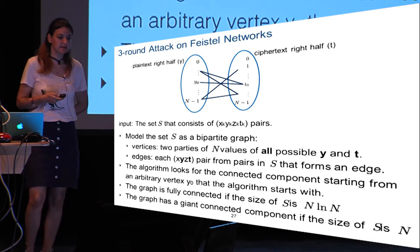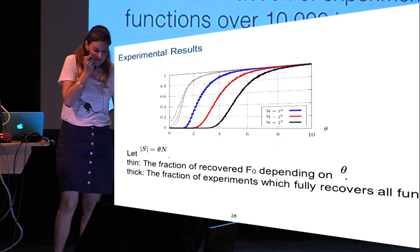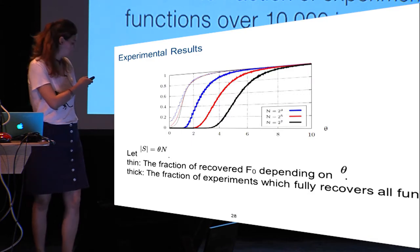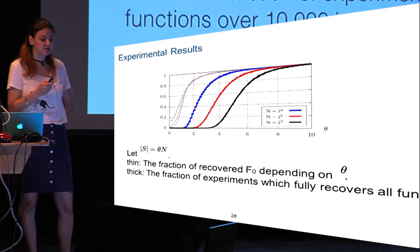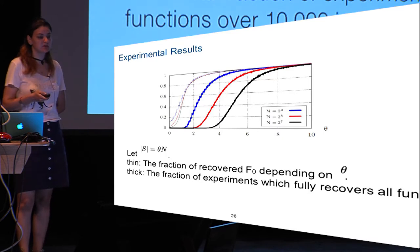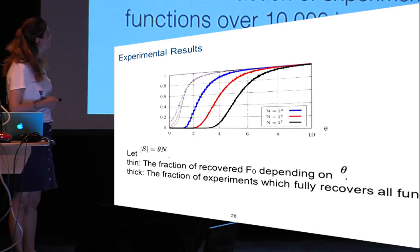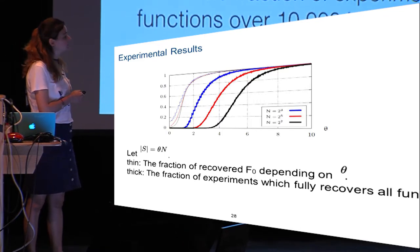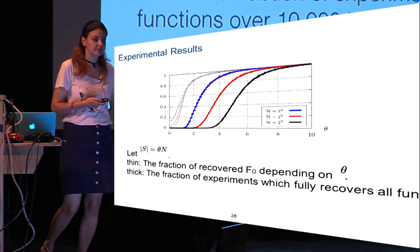Here are experimental results. The x-axis shows |S| parameterized by theta, and the y-axis shows two things: thick lines represent the fraction of experiments achieving full round function recovery over 10,000 independent runs, and thin lines show the fraction of recovered f0 depending on theta. Notably, the fraction of recovered f0 is independent of n — it gives similar results regardless of the domain size.